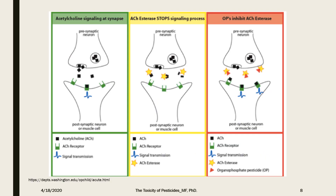This graph illustrates the dynamics of acetylcholine and acetylcholinesterase enzymes at the synaptic space. The green panel shows acetylcholine acting on receptors to generate signal transmission. Normally, acetylcholinesterase catalyzes the degradation of acetylcholine in the synapse, as shown in the yellow panel. Organophosphate pesticides phosphorylate acetylcholinesterase, reducing its ability to break down the neurotransmitter, producing an accumulation of acetylcholine at nerve endings in both the central and peripheral nervous system, resulting in acute cholinergic syndrome.